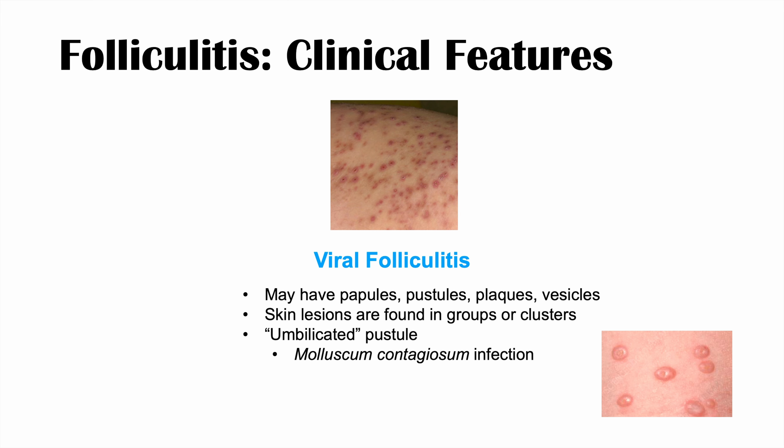You can see papules, pustules, plaques, or vesicles. Skin lesions are found in groups or clusters most often with herpes virus infections, and the umbilicated pustules are those caused by molluscum contagiosum infections.